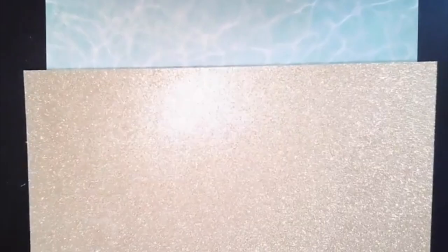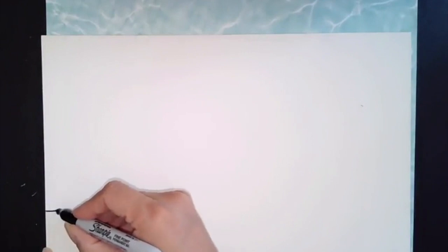Now it's time to prepare the background. I chose to get some paper that looked like water and also some glitter paper so go ahead and turn it over and draw a wavy line on the back.